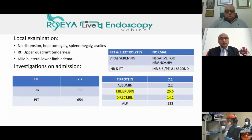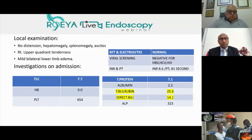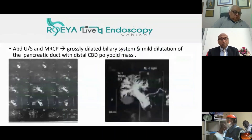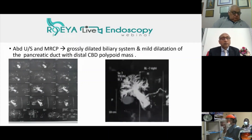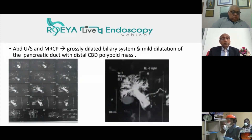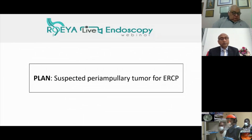Local examination showed right upper quadrant tenderness and mild bilateral lower limb edema. Investigations showed elevated total bilirubin and direct bilirubin. Abdominal ultrasound and MRCP showed a grossly dilated biliary system and mild dilation of the pancreatic duct with a distal common bile duct polypoid mass. Today we have a suspected peri-ampullary tumor and we're going to perform ERCP.